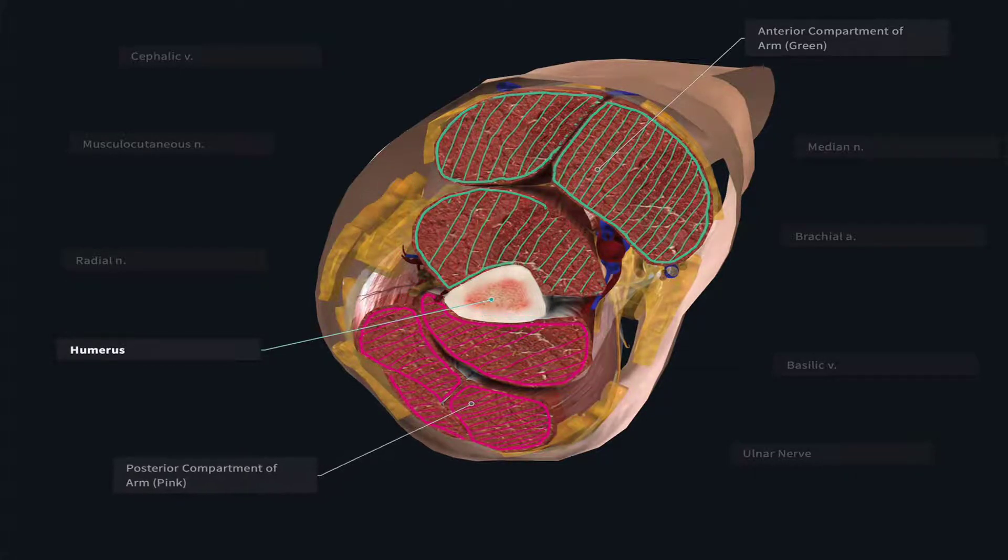The posterior compartment of the arm has been highlighted in pink. And although this looks like there's multiple components, which there are, they're actually all of one large muscle, which we'll look at in more detail with the posterior compartment of the arm.